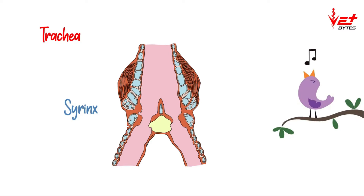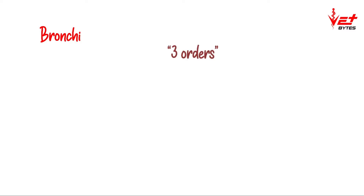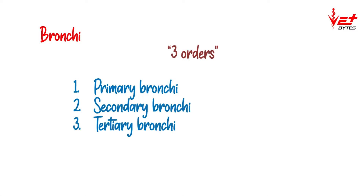Next we'll see about bronchi. Mammals have many orders of bronchial divisions, but birds have only three orders: primary bronchi, secondary bronchi, and tertiary bronchi. Tertiary bronchi are also called parabronchi, and this is the place where actual gaseous exchange takes place.